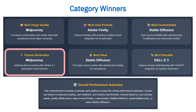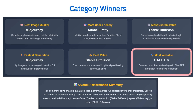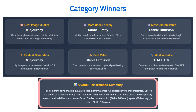Now for speed, Midjourney claims fastest generation, delivering lightning-quick results powered by its optimized version 6.1 engine. When it comes to value, Stable Diffusion shines again, offering free, open-source access with optional paid hosting for convenience. And finally, DALL-E 3 takes the crown for most versatile, with superior prompt understanding and ChatGPT integration that lets you refine your ideas step by step. Each of these champions excels in its own lane, so the real win is knowing which lane you want to drive in.